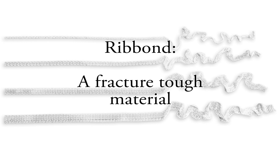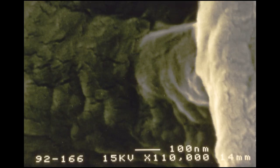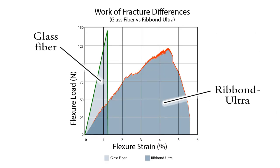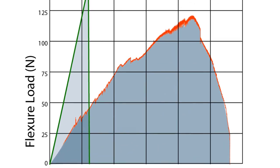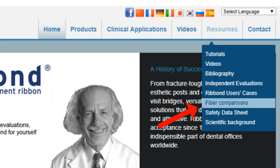Ribond — a fracture tough material. The unique combination of Ribond's super-tough bulletproof fibers, patented lockstitch Lenaweave, and bondability characteristics make Ribond the most fracture-tough fiber reinforcement available to the dental industry. This chart demonstrates the fracture toughness of Ribond versus a glass fiber reinforcement. Fracture toughness is measured by the gross area under the curves. Although a glass fiber reinforcement might have higher flexural strength, the gross area under the glass fiber curve is significantly less than under the Ribond curve. For dental professionals who wish to learn more, in-depth explanations are available at ribond.com — go to Resources, then Fiber Comparisons.